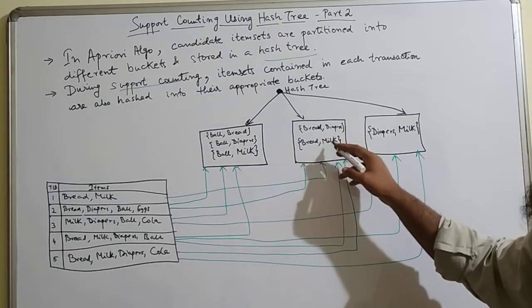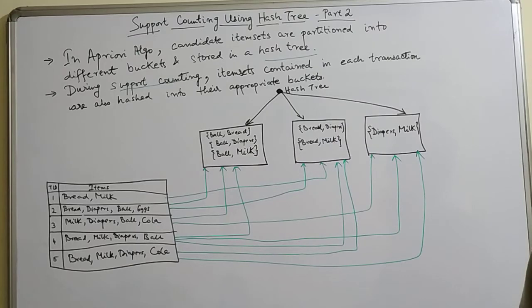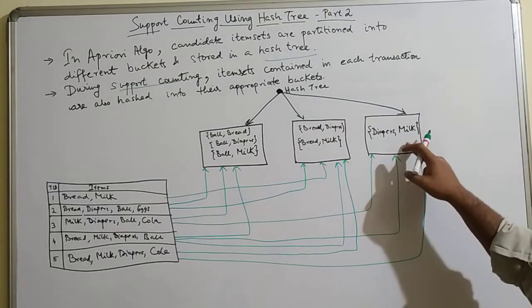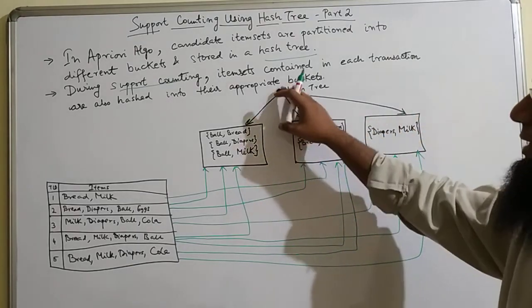Similarly, bread and milk are in a separate bucket. Then you have diaper and milk in a third bucket. And all these three are hashed.